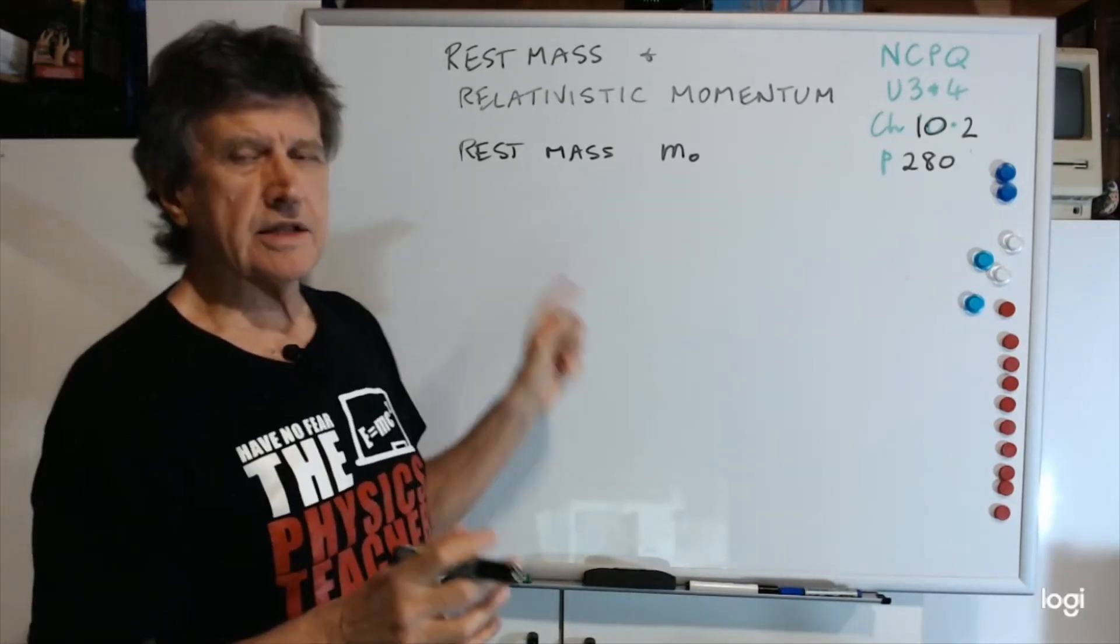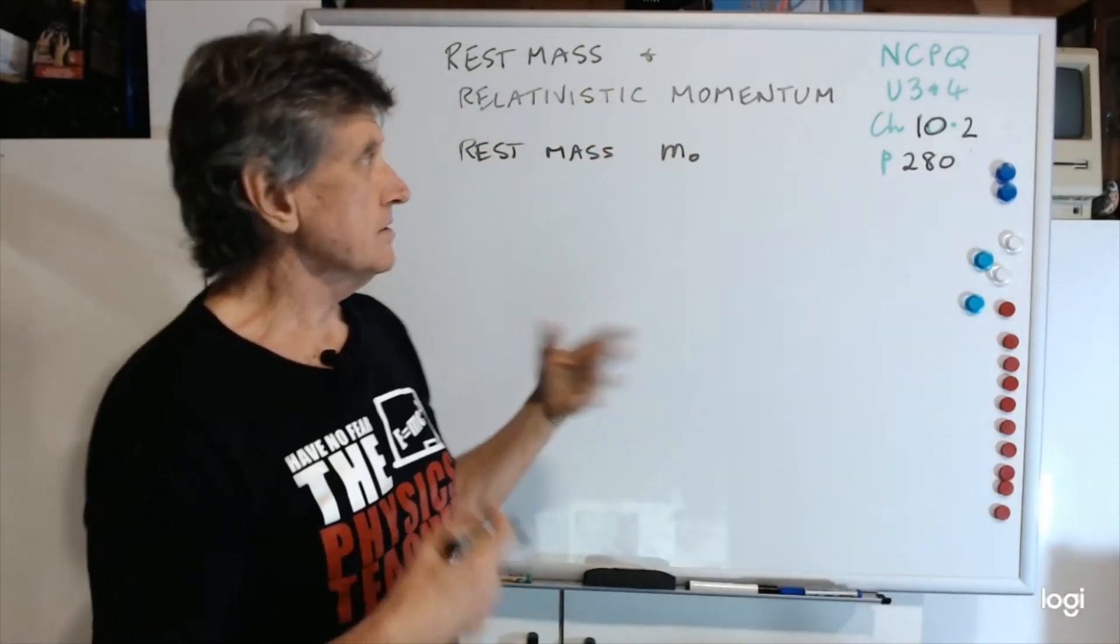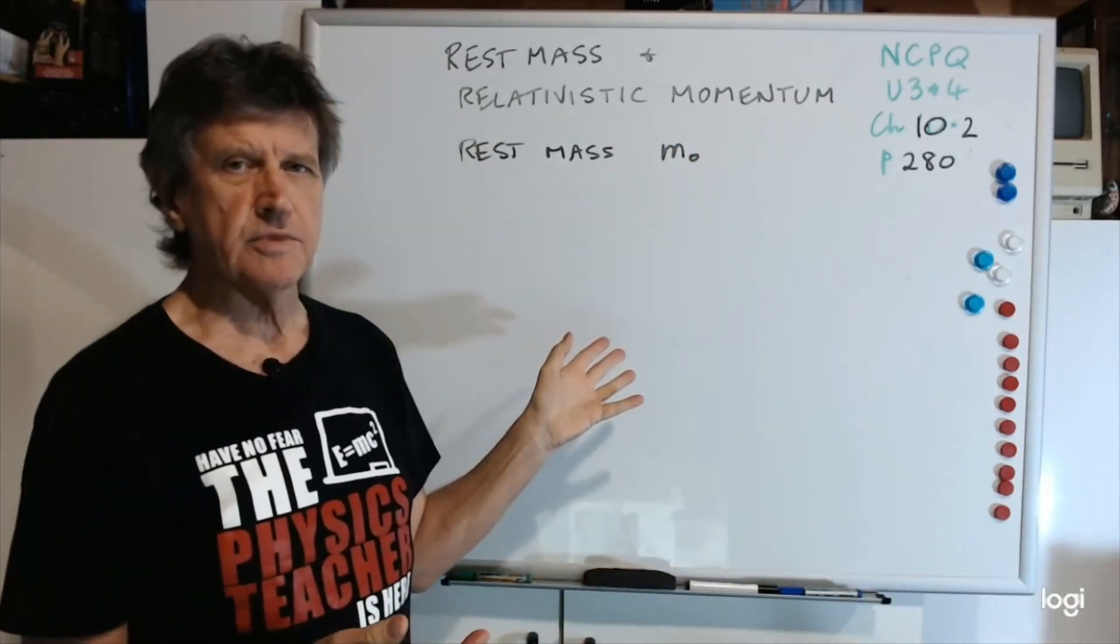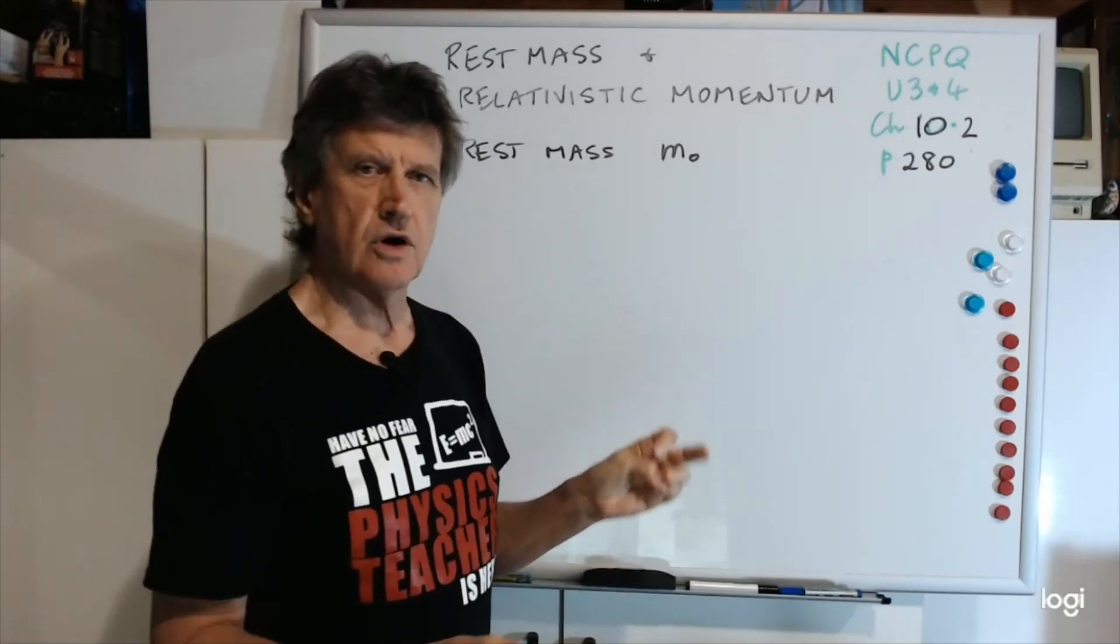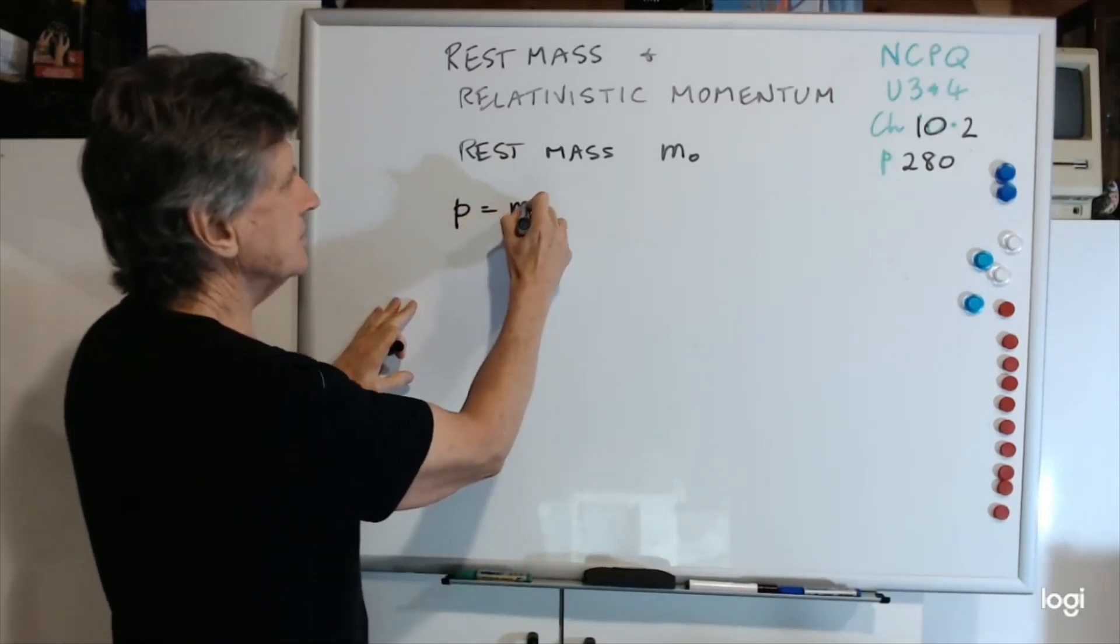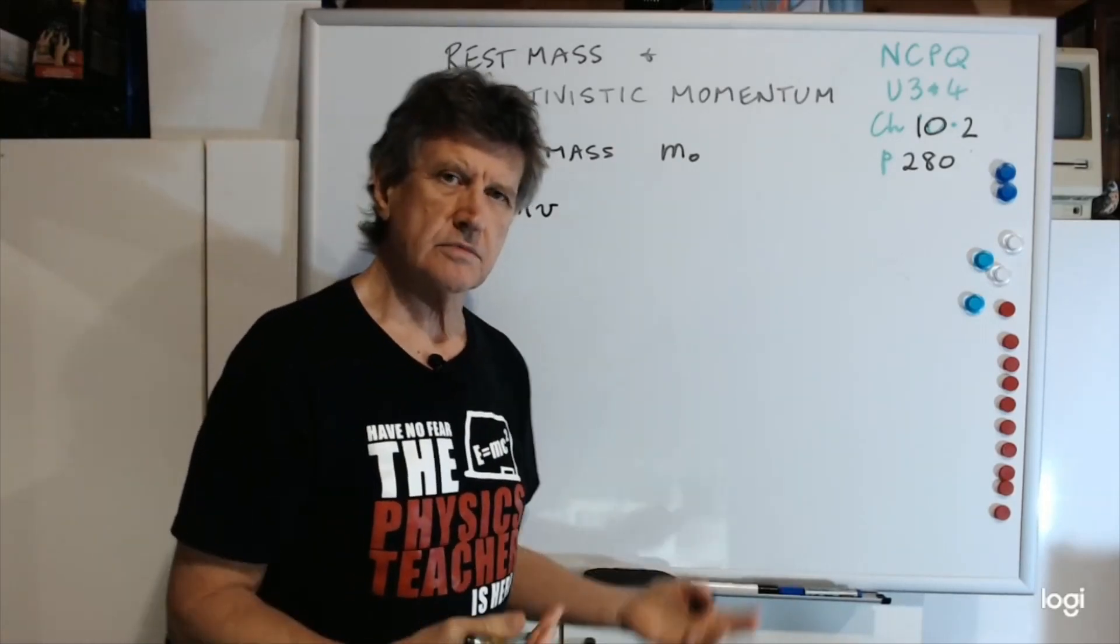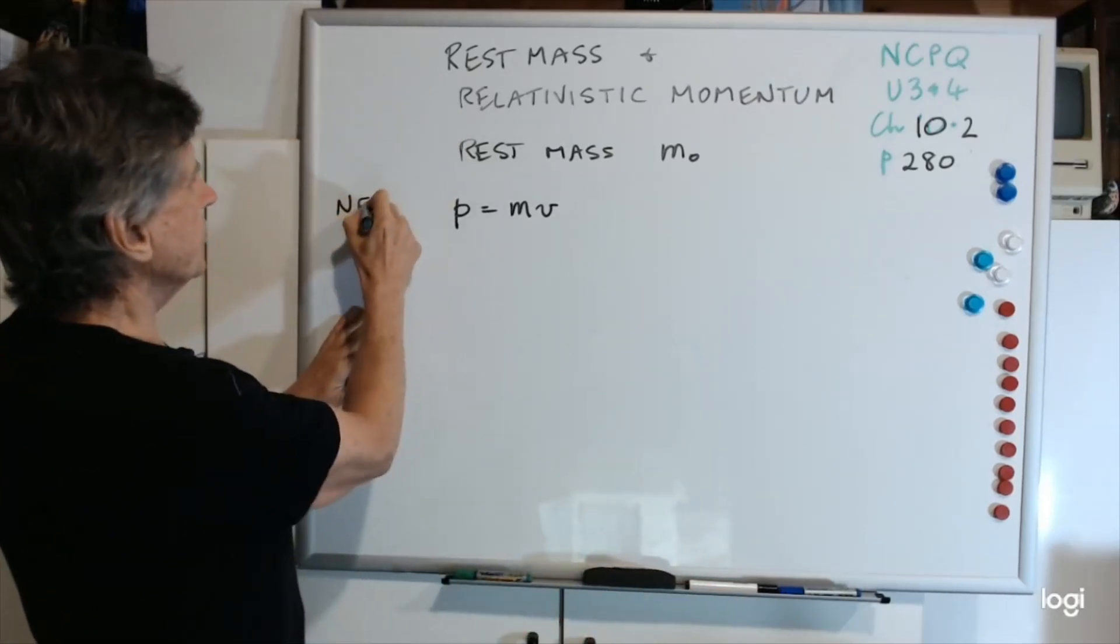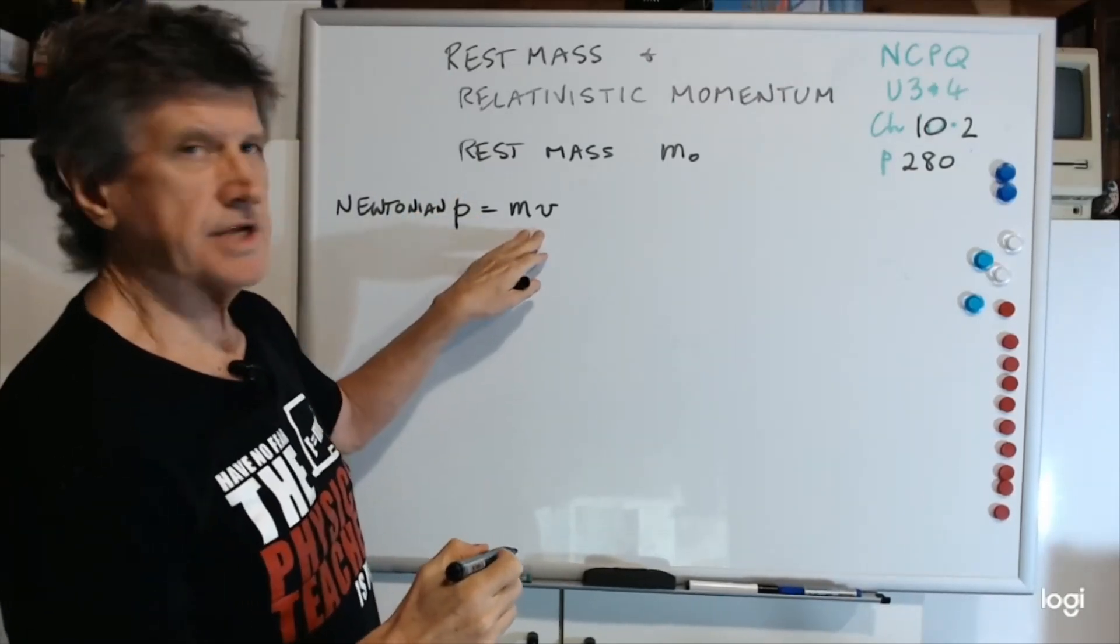Now the only thing the syllabus talks about is relativistic momentum. All you have to be able to do is do calculations on relativistic momentum. It's a simple formula, very much like the same formulas as you've had before. You know very well that p equals mv, that's the old Newtonian formula you've been using all through, probably since grade 10, grade 11. This we could call Newtonian.